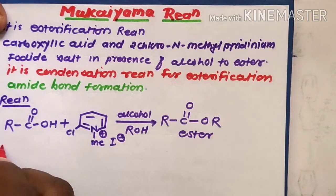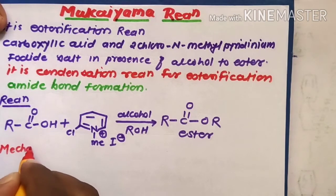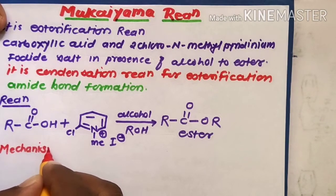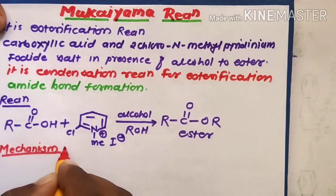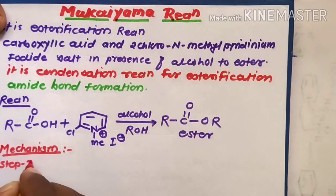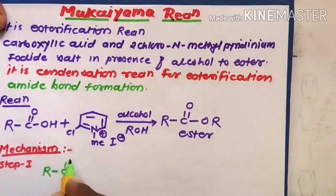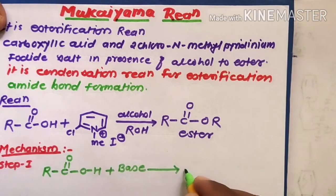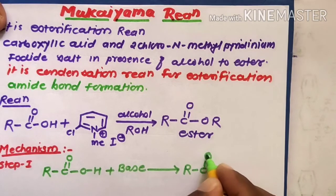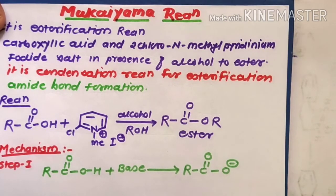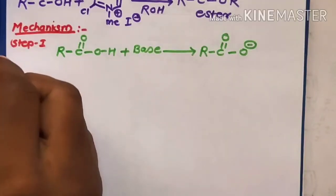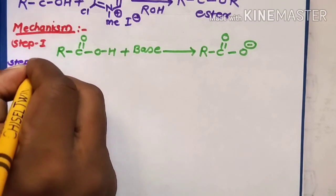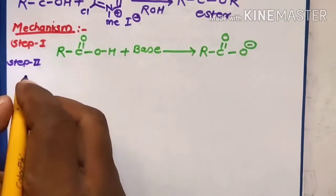Now the possible mechanism of the Mukaiyama reaction. In step one, carboxylic acid (R-C double bond O-OH) reacts in the presence of a base to form the carboxylate ion, R-C double bond O-O minus.